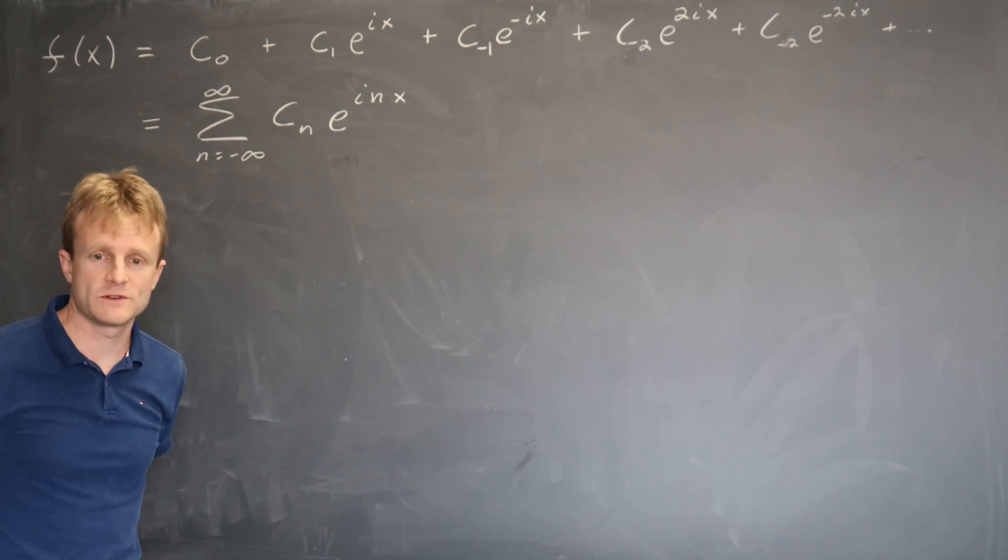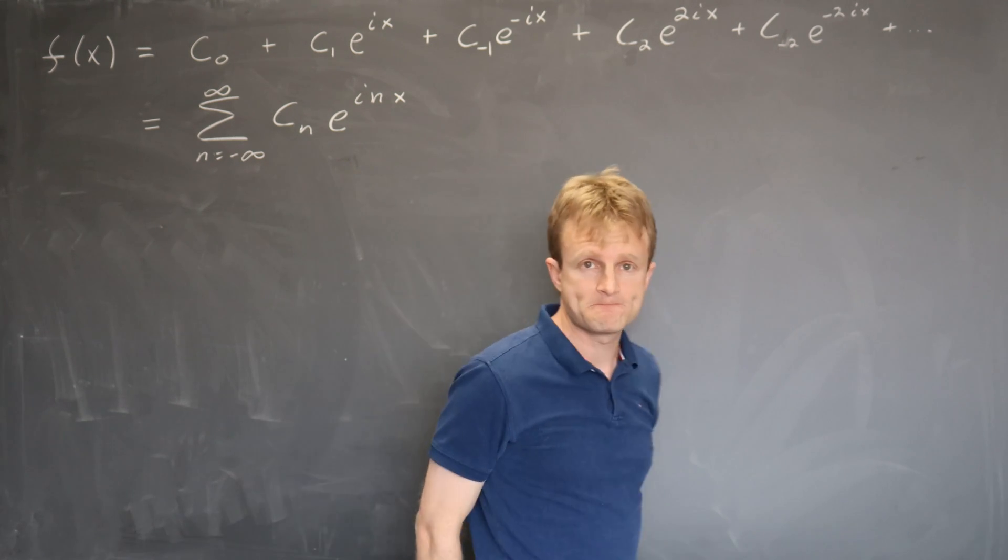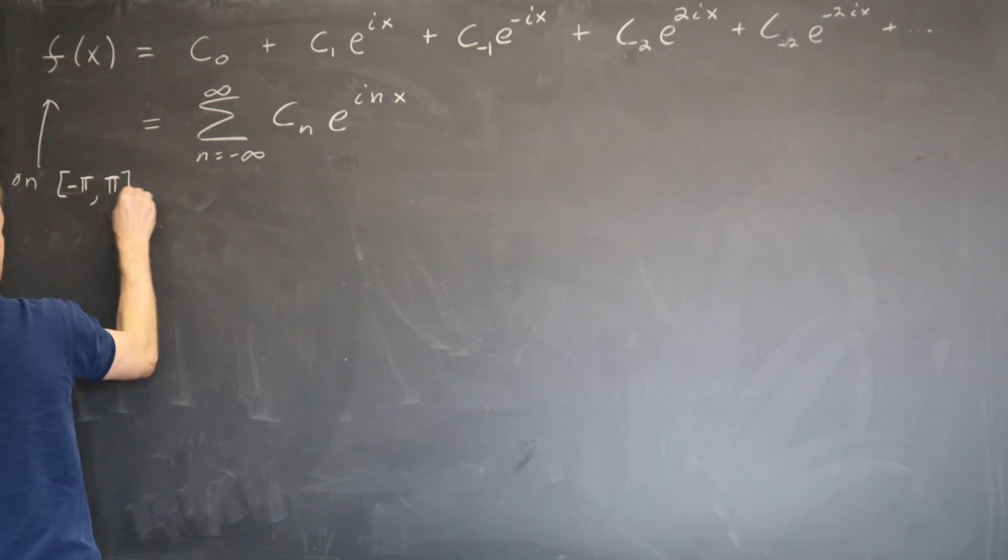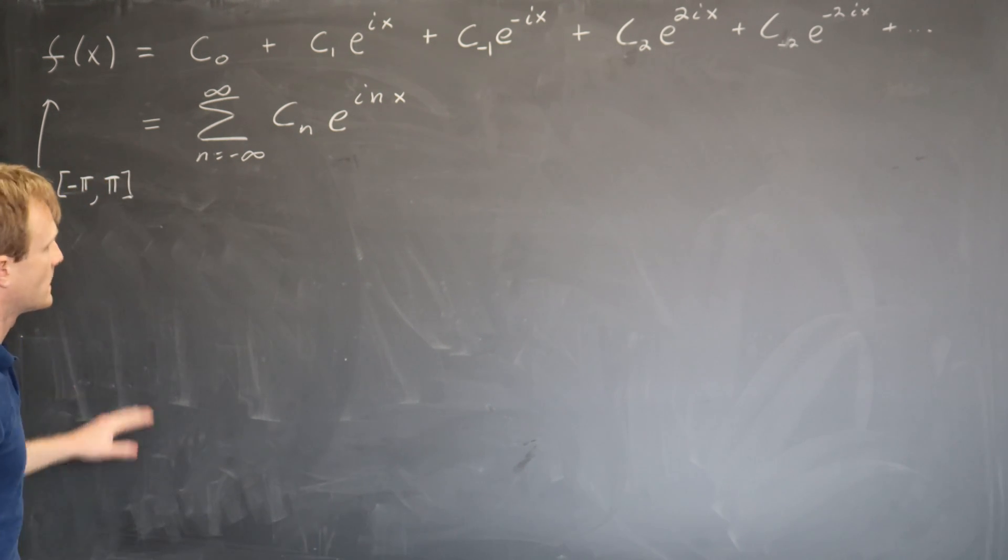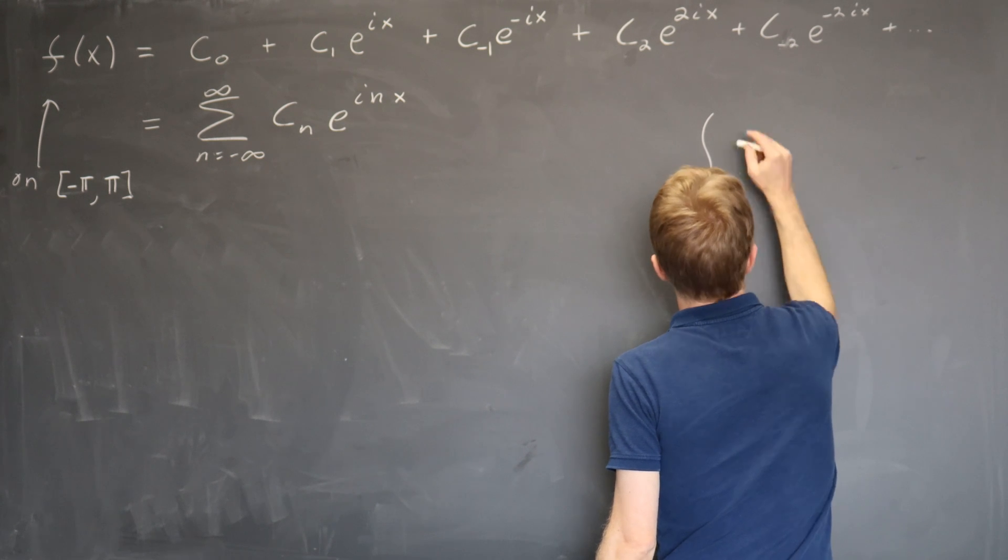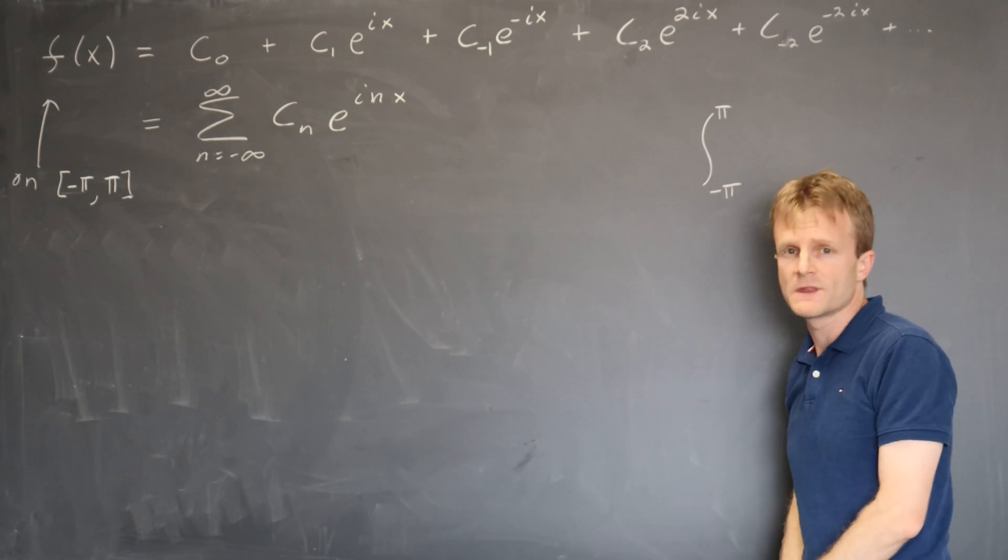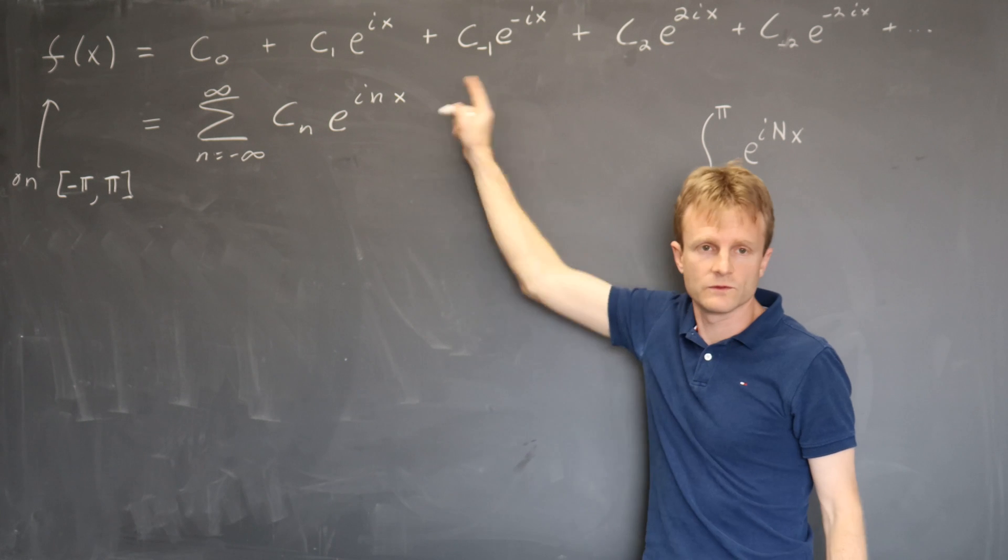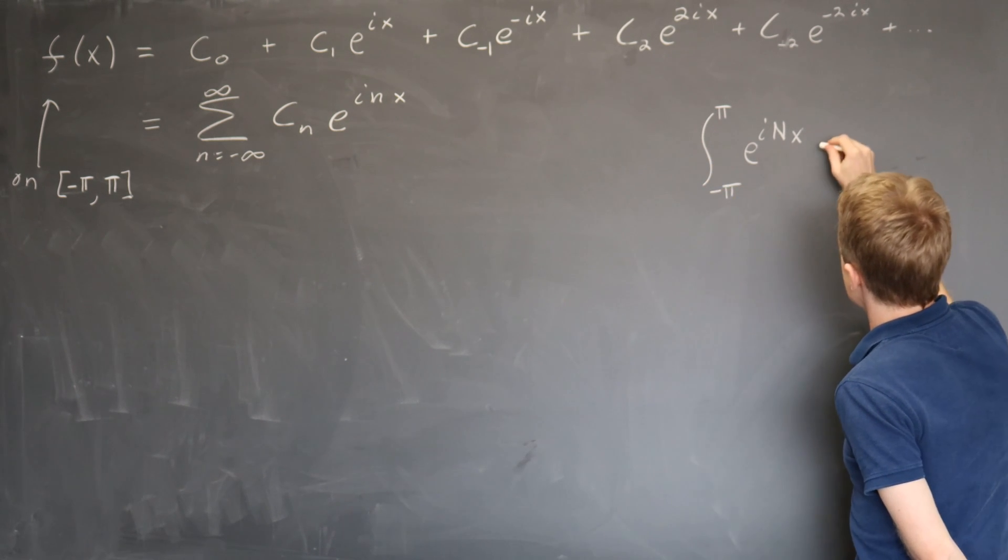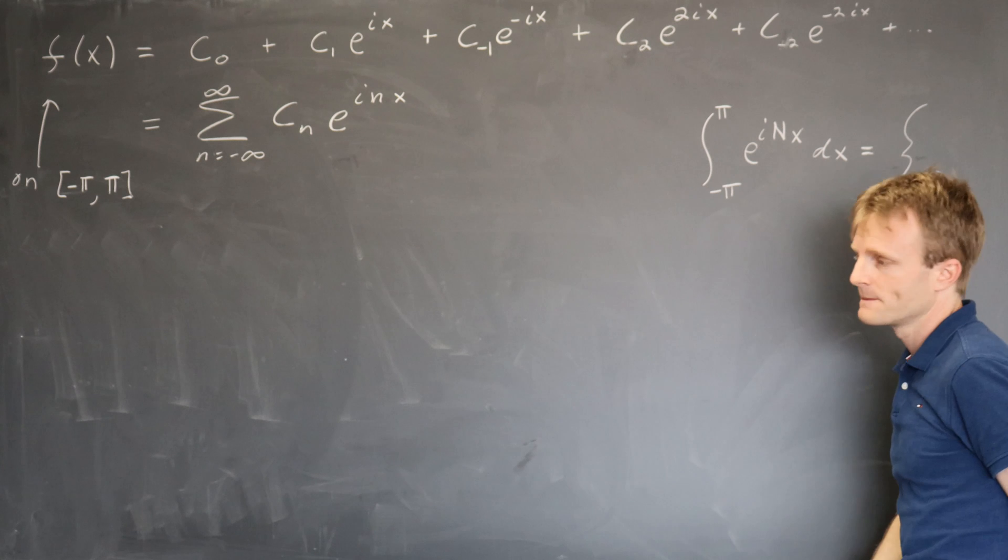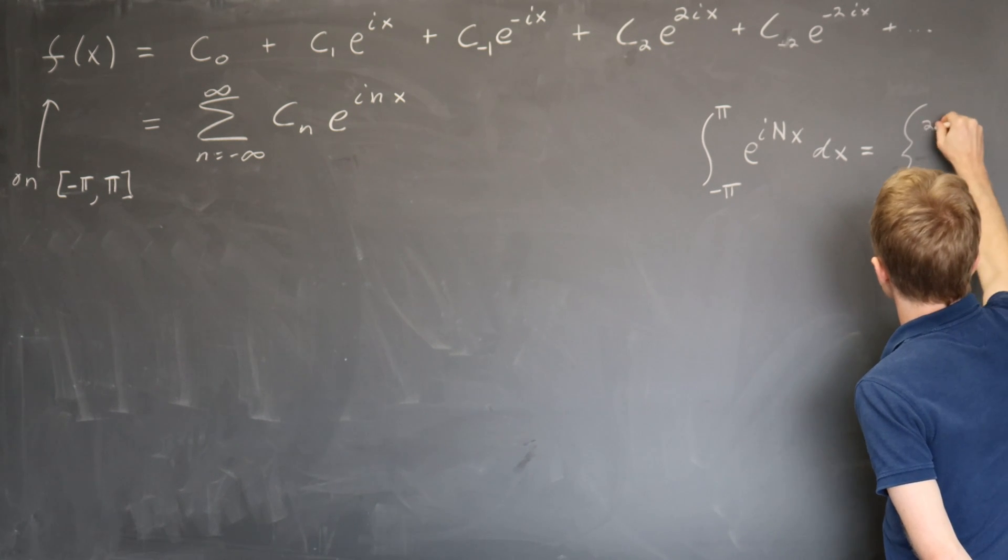And it's actually surprisingly simple when you get the trick. The key observation is that we're going to think about functions on the interval minus pi to pi. We're going to restrict ourselves to that interval. And the integral over that interval of the function e to the i capital Nx to distinguish it from some term in the series. If n is any integer, this thing is actually equal to 0 unless n happens to be 0, in which case it's equal to 2 pi.